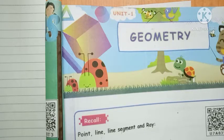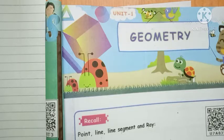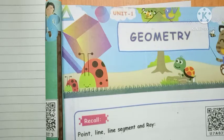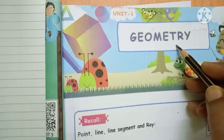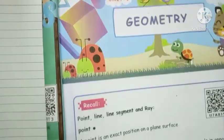3D shapes — examples include cube, cuboid, cylinder, cone. These 3D shapes have length, height and width. Now we start Term 2. The topic is the same — geometry — but the content is different.